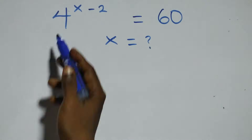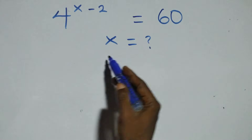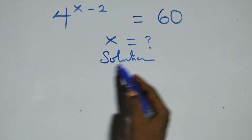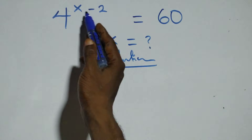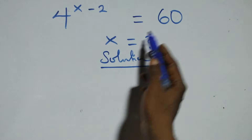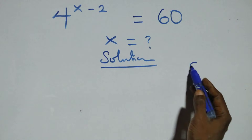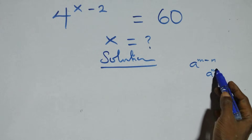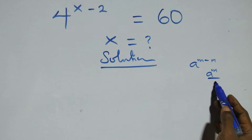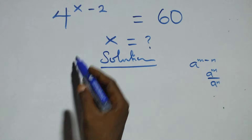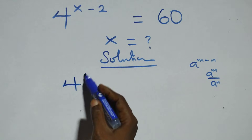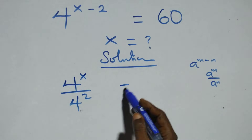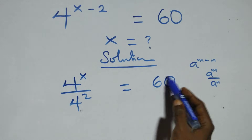Hello, you are welcome. I have to solve this nice exponential equation. What we have here is 4 raised to the power x minus 2 equals 60. This follows the rule that a raised to power n minus n is the same as a raised to power n over a raised to power n. So here we have 4 raised to power x over 4 squared equals 60.